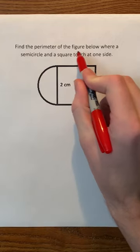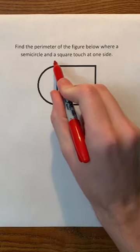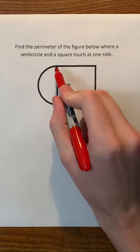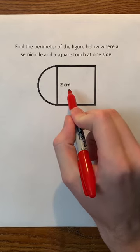Find the perimeter of the figure below, where a semicircle and a square touch at one side. And that one side has a length of 2 centimeters.